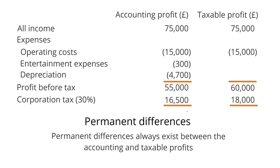It's important to remember that permanent differences will only impact the accounting year in question. You only recognise entertainment expenses on your income statement in relation to the previous accounting period that they relate to. With this in mind, permanent differences only affect the current tax year — the current accounting period in which they relate to — and therefore tax assets or liabilities arising from these differences will not accrue over time.